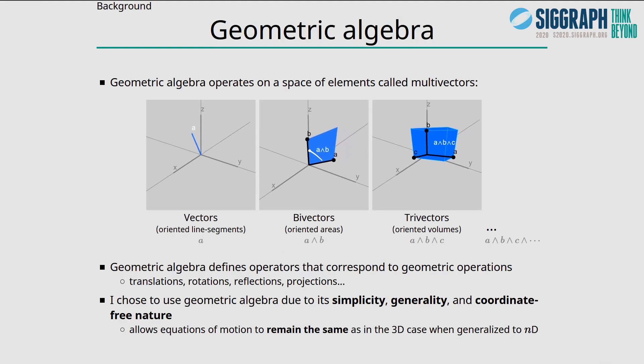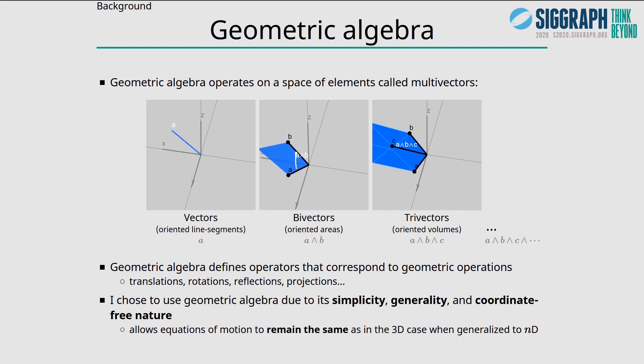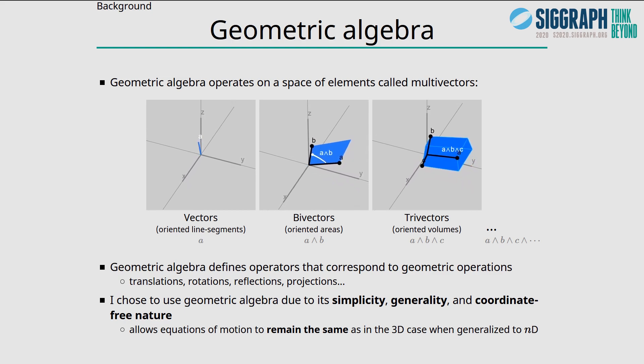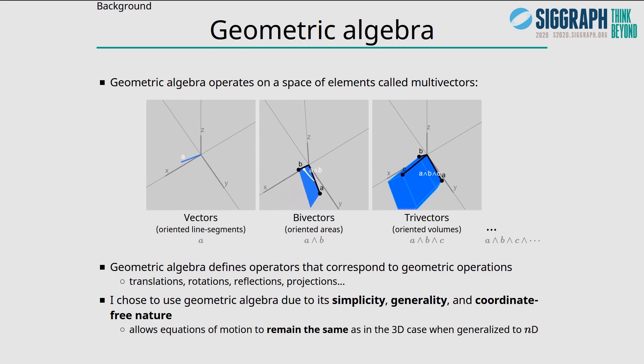Geometric algebra operates on a space of elements called multi-vectors. Vectors are a subspace—they are oriented line segments. But there are also oriented areas and oriented volumes, called bi-vectors and tri-vectors. In 4D you can have 4-vectors, etc. Geometric algebra defines operators that correspond to geometric operations such as translations, rotations, reflections. I chose to use geometric algebra due to its simplicity, generality, and coordinate-free nature. It allows the equations of motion to remain the same as the 3D case when generalized to n dimensions.